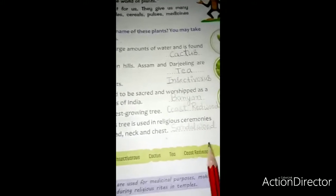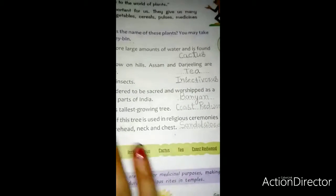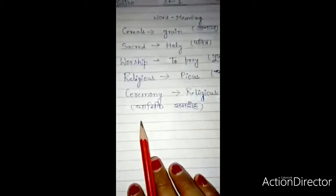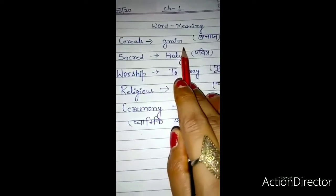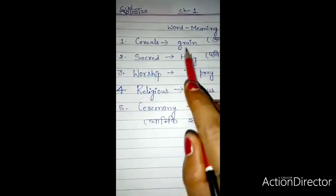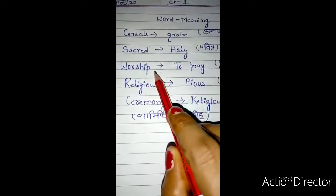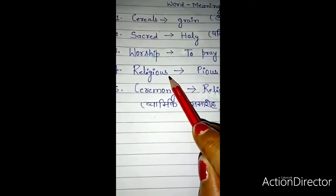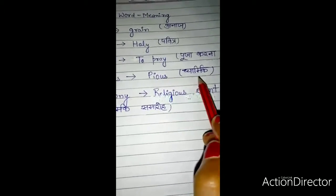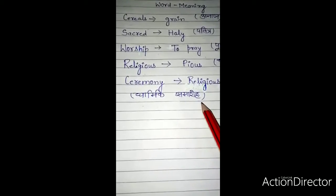Students, this is your chapter 1. You will fill these from here. Your other work is word meaning of chapter 1. Number 1: serial means grain — अनाज. Second: sacred means holy — पवित्र. Third: worship means to pray — पूजा करना. Fourth: religious means pious — धार्मिक. Fifth: ceremony means religious events — धार्मिक समारोह.